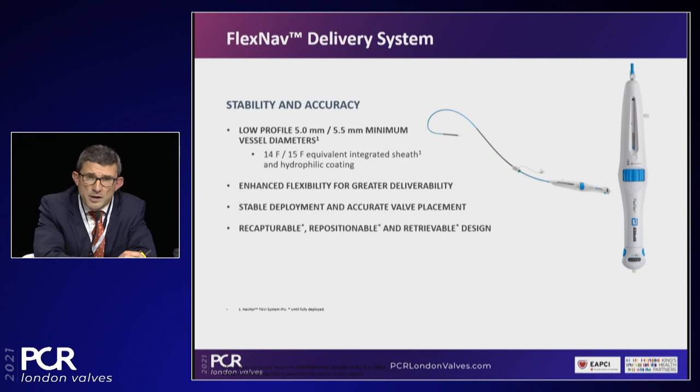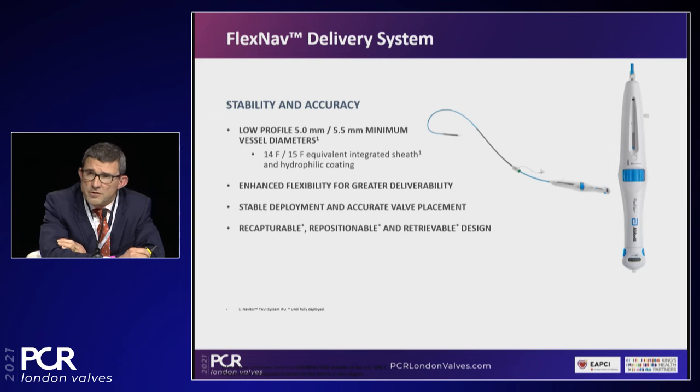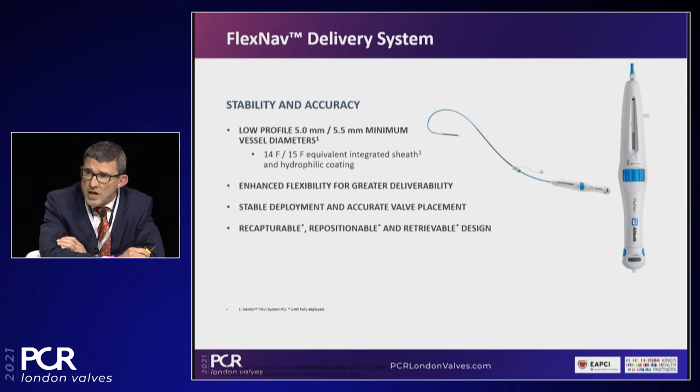The first topic is an overview of the Navitor with the FlexNav TAVI system and 30-day outcomes from Dave Smith. The FlexNav delivery system is a very flexible and highly deliverable system, consisting of an inline hydrophilically coated sheath system able to be delivered to femoral arteries as small as 5.0 millimeters for smaller valves and 5.5 millimeters for larger valves. It provides stable and accurate valve deployment, and maintains the Portico advantage of being recapturable, repositionable, and even retrievable.